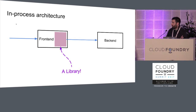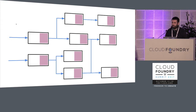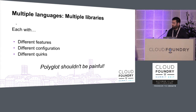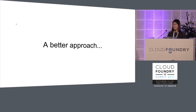But remember, it's not a monolith — you have many microservices. You put this library into all of them, but they're probably not all written in the same language. You have a mixture of languages and therefore a mixture of libraries. Those libraries are subtly different — different feature sets, different configurations, different quirks, interacting with each other in frustrating ways. Using multiple languages should not be painful, but it is with the library approach. That's what really leads us to sidecars.